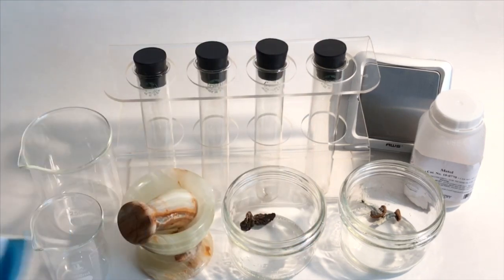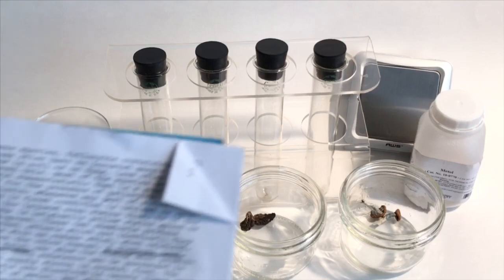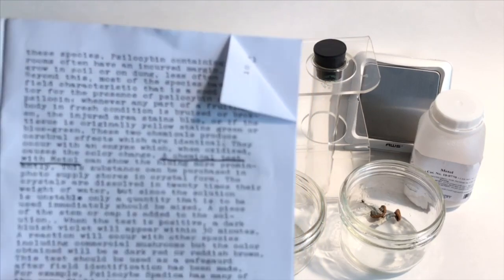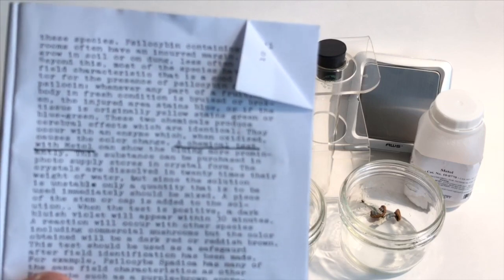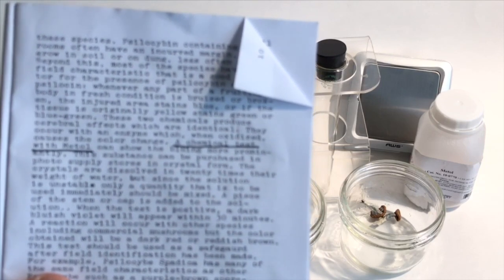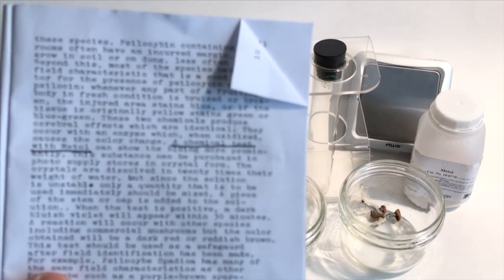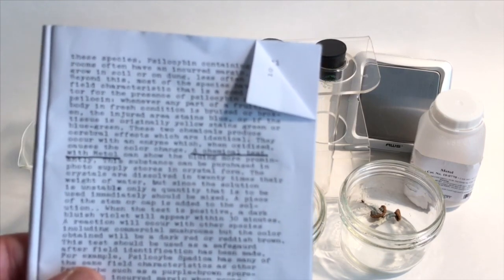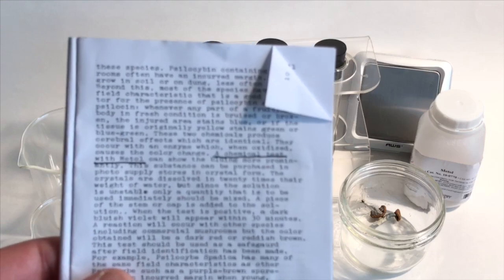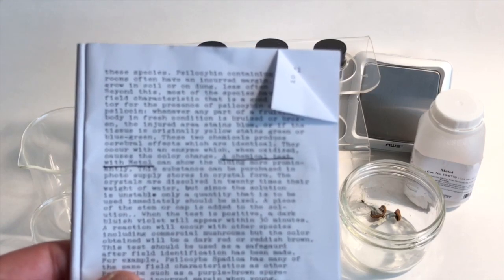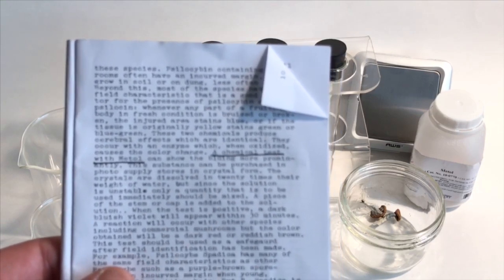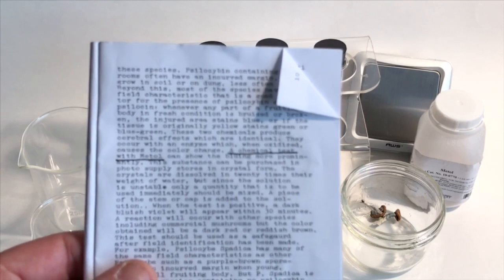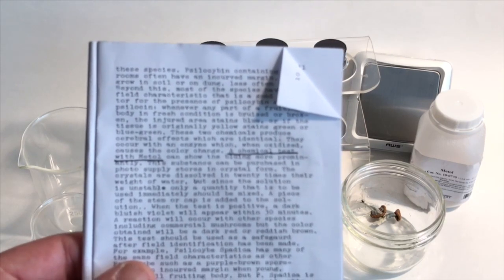So I'm reading in this new booklet that I got and I'll just read to you a little bit. A chemical test with metol can show the bluing more prominently. This substance can be purchased in photo supply stores in crystal form. The crystals are dissolved in 20 times their weight of water, but since the solution is unstable, only a quantity that is to be used immediately should be mixed. A piece of the stem or cap is added to the solution.